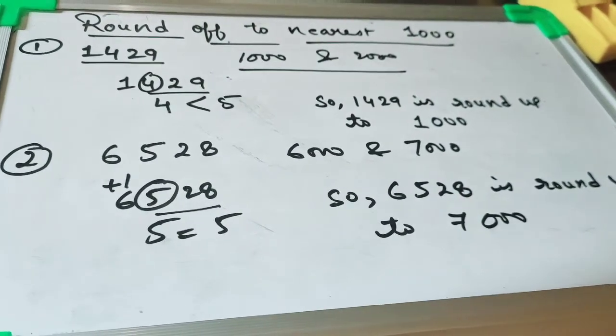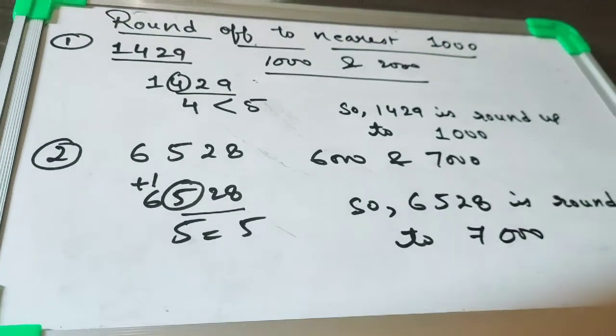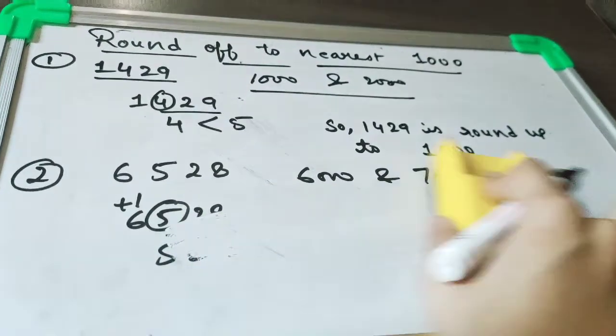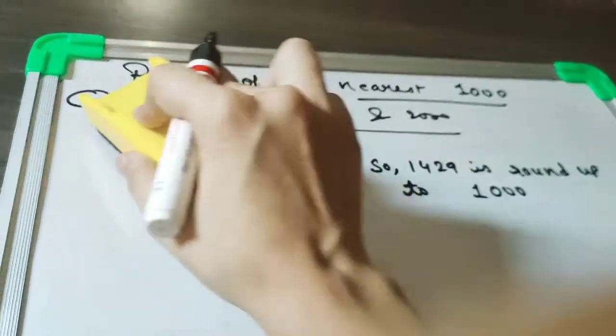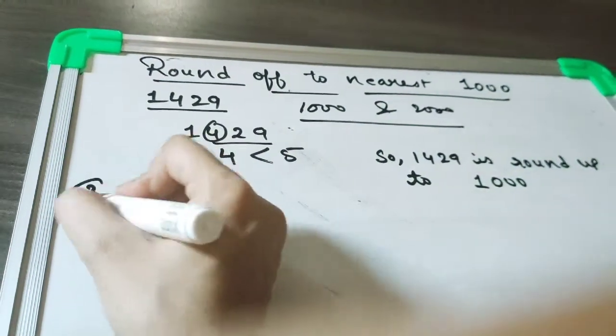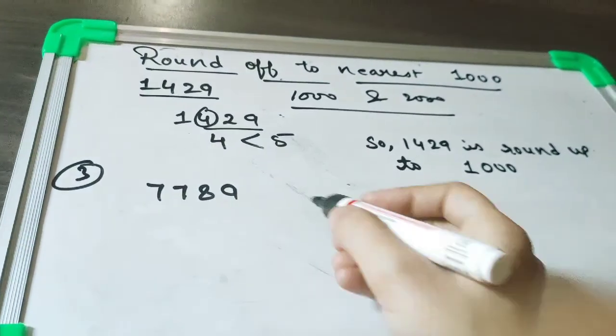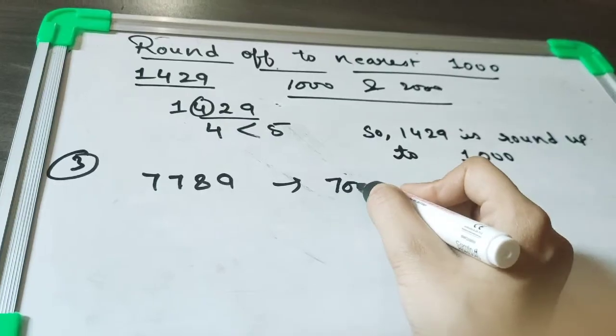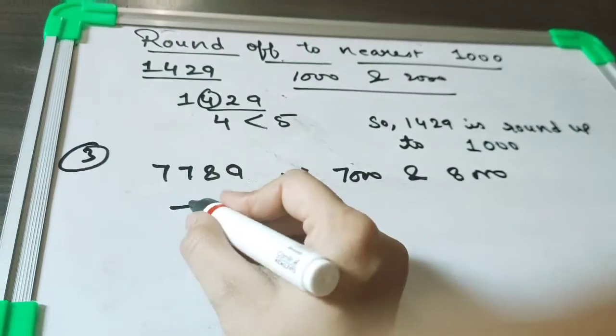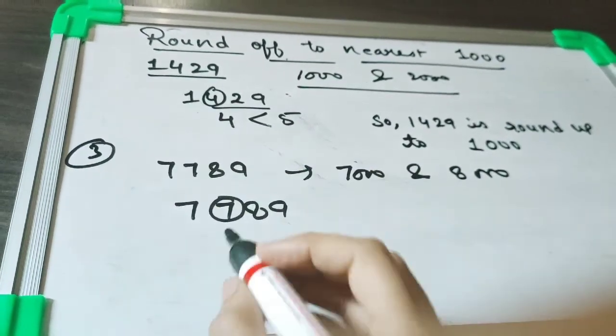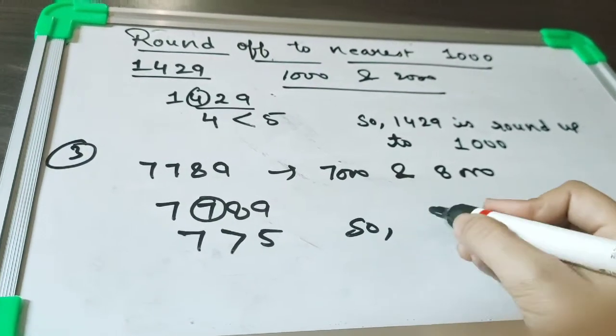Should I tell you one more example? Okay, let's discuss one more example. That is 7789. So it is between which numbers? 7000 and 8000. Now, 7789—7 is greater than 5.